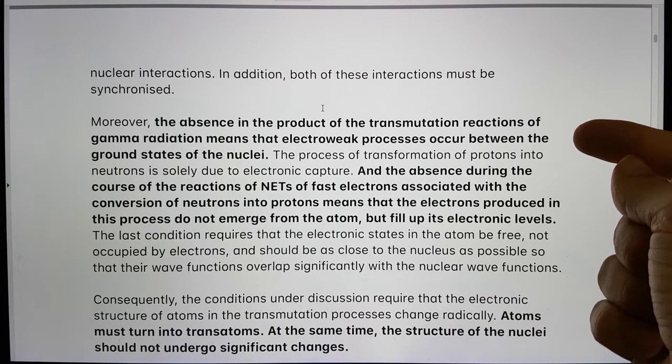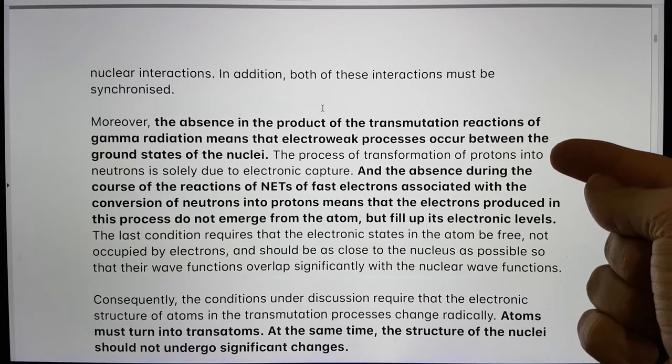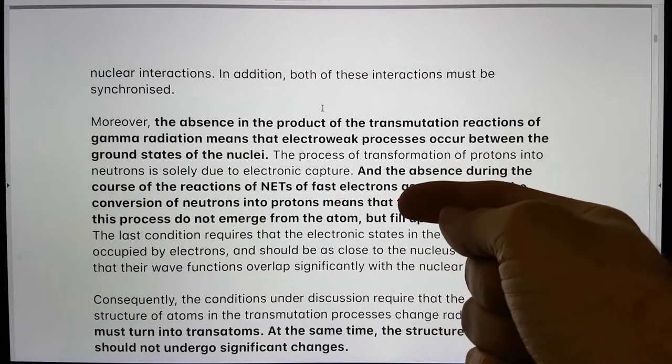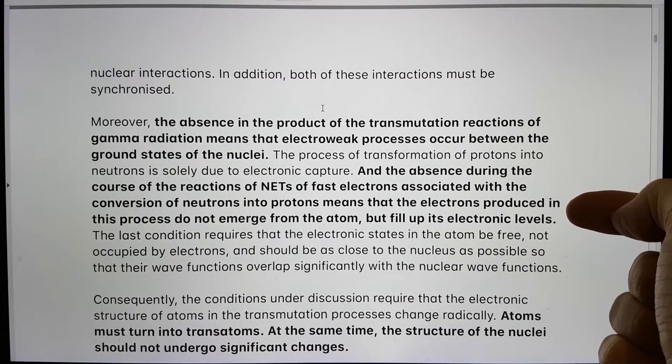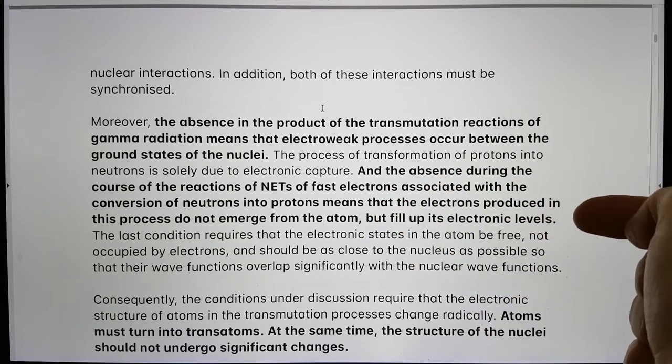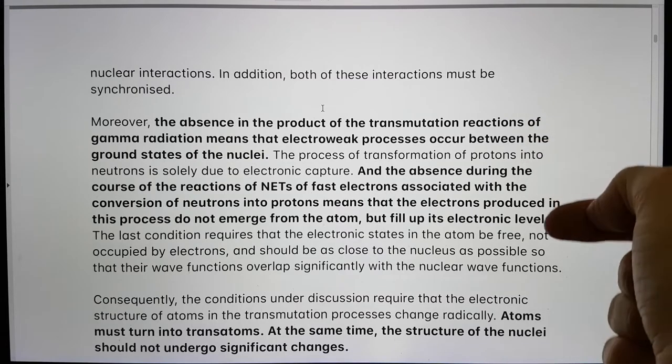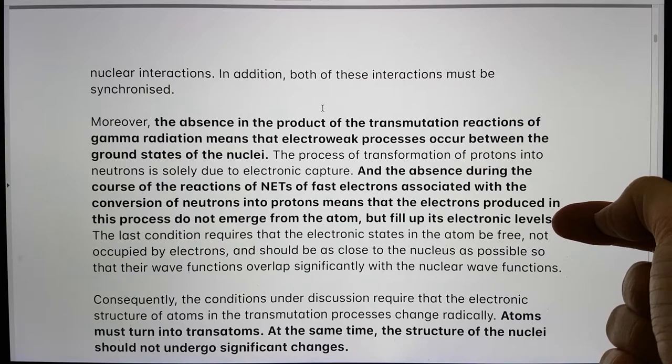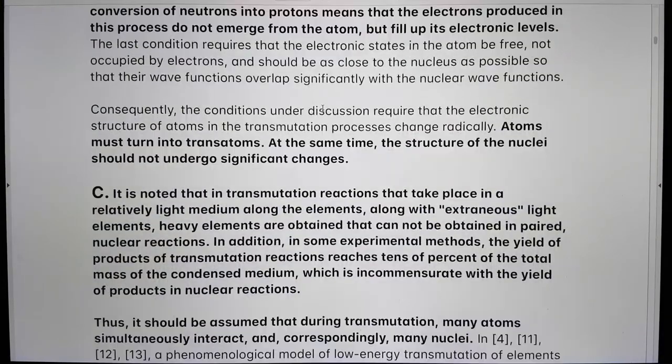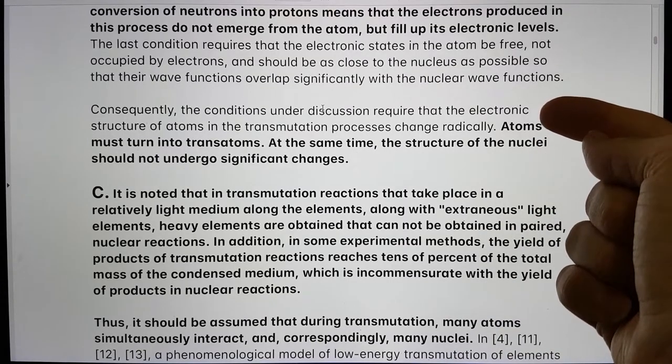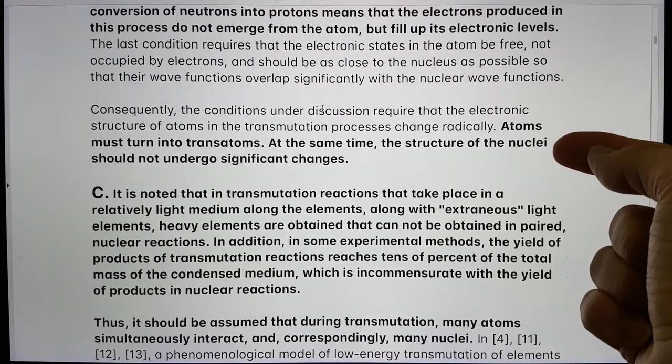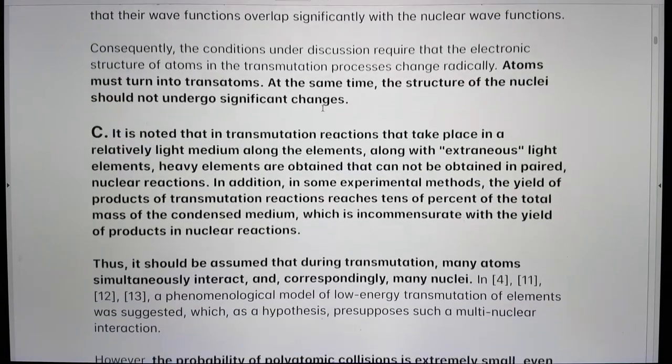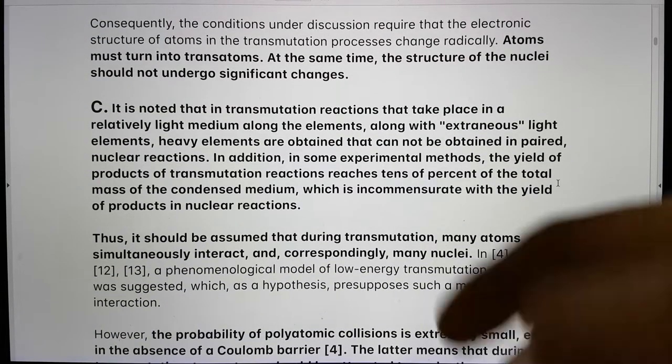Moreover, the absence in the product of the transmutation reactions of gamma radiation means that electroweak processes occur between the ground states of the nuclei. And the absence during the course of these transmutation reactions of fast electrons associated with the conversion of neutrons into protons means that the electrons produced in this process do not emerge from the atom but fill up its electronic levels. Consequently, the conditions under discussion require that the electronic structure of atoms in the transmutation process change radically. Atoms must turn into what he calls trans atoms. At the same time, the structure of the nucleus should not undergo significant changes.